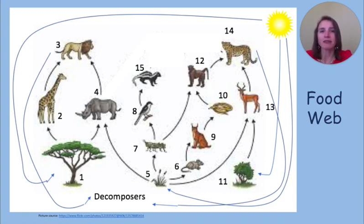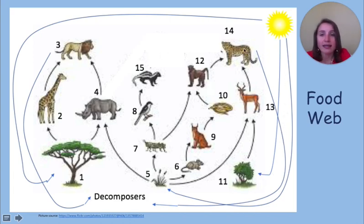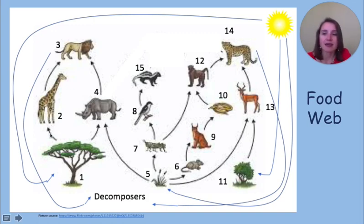Now let's take a look at this food web to learn more about the ecosystem. Some of the organisms may be a little difficult to see, so I might refer to them by their number. The first thing I like to do when looking at a food web is to determine what are the producers. So one, five, and eleven are my producers. I know this because if I follow their arrows back, they go to the sun — so I know they are getting their energy from the sun. If I look at number one, I can see that the giraffe is eating the leaves from this tree. And then the lion is eating the giraffe. This would be one food chain.